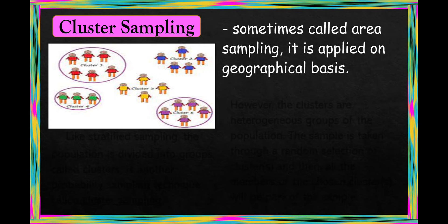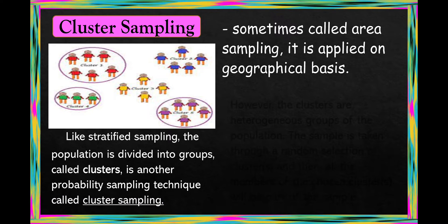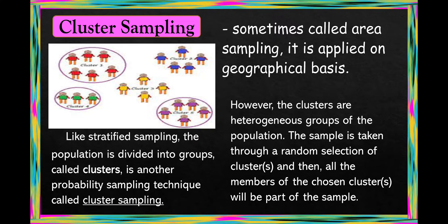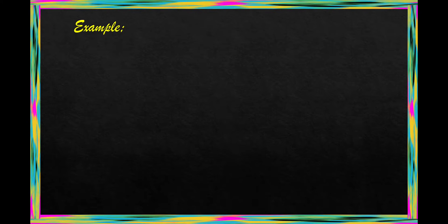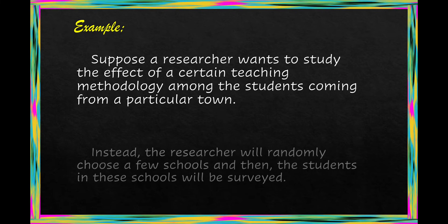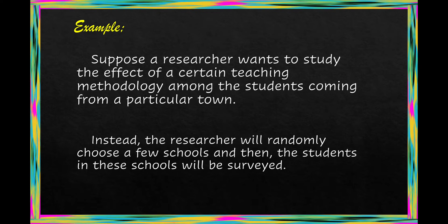Next, we have cluster sampling, sometimes called area sampling. It is applied on a geographical basis. Like stratified sampling, the population is divided into groups called clusters. However, the clusters are heterogeneous groups of the population. The sample is taken through a random selection of clusters, and then all members of the chosen clusters become part of the sample. For example, a researcher wants to study the effect of a certain teaching methodology among students from a particular town. The researcher randomly chooses schools, and then students in those schools are surveyed.